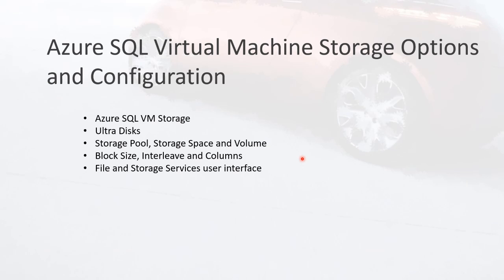Now we'll talk about storage options and configuration — what the options are, what ultra disks are, and importantly: storage pools, storage spaces, volumes, block size, interleave, and columns. The last part will cover the file and storage services user interface to manage and configure application storage. Here's an example of how to do that.